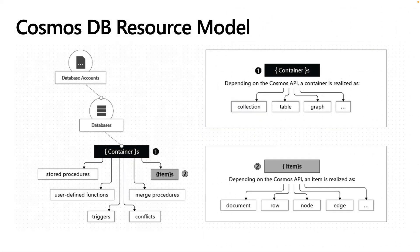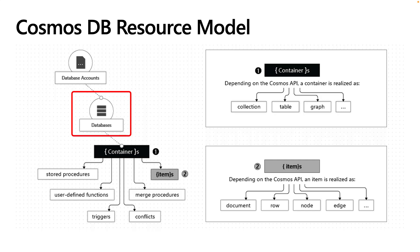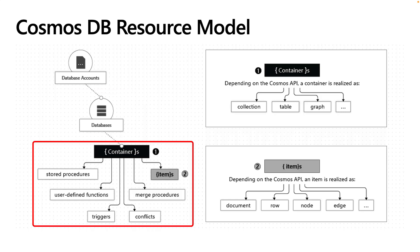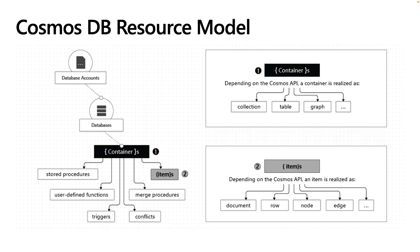Digging a little deeper into the Cosmos DB resource model: database accounts contain zero or more databases, which in turn contain zero or more containers. The containers will hold your data and any server-side code. The data stored will be described differently based on the API you choose. In most cases, the container will be a collection of documents related to either the SQL API or the Mongo API.